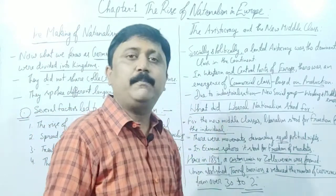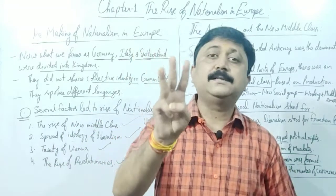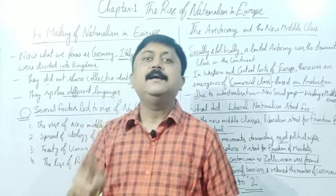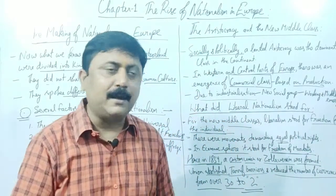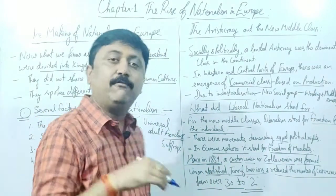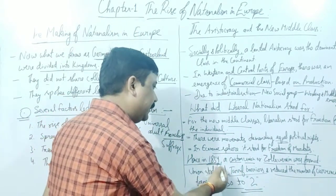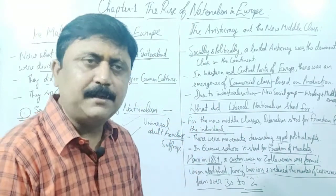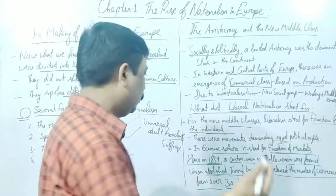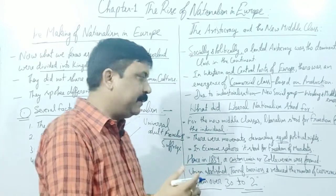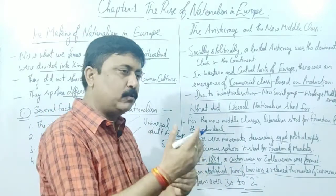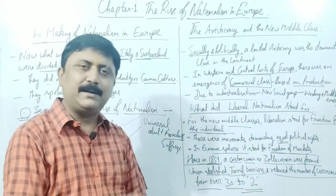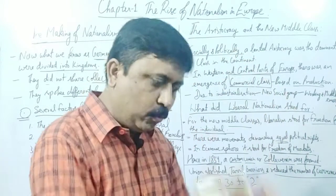Secondly, the currencies — at that time in Europe there were at least 30 types of currencies circulating in the market. Those 30 currencies were reduced to only 2 currencies made active in Europe. So if you are asked: when was Zollverein formed — it was formed in 1834. What was Zollverein — it was a custom union, an organization. What did Zollverein do — two things: first, it abolished all trade barriers and regulations; second, it reduced the number of currencies from 30 to 2.